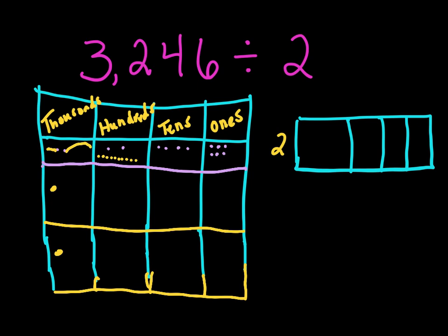We know 12 is divisible by 2, so we split up the 12 hundreds equally. We have 4 tens, and that's divisible by 2, so we split those up — 1, 2, 3, 4. And we have 6 ones, and that's divisible by 2. So how much do we have? We've got 1,000 in the thousands, 5 hundreds, 2 tens, and 3 ones.